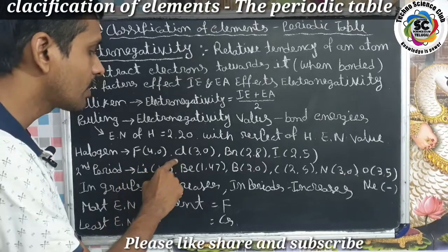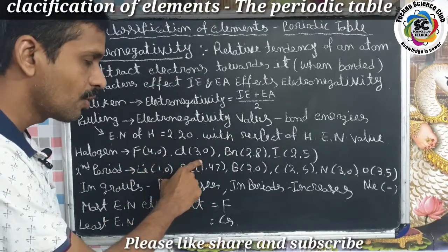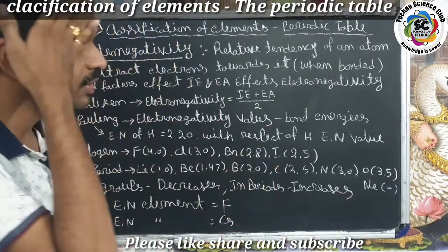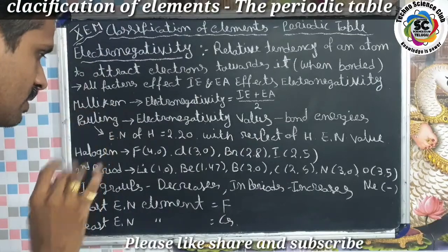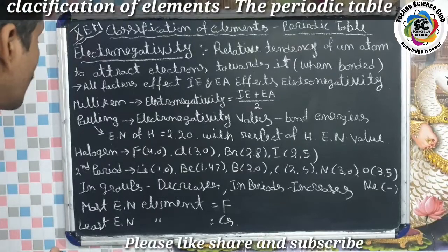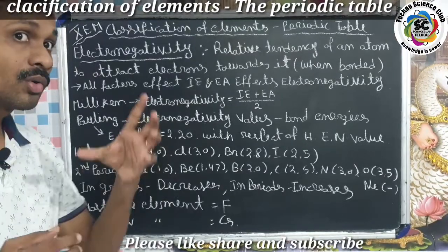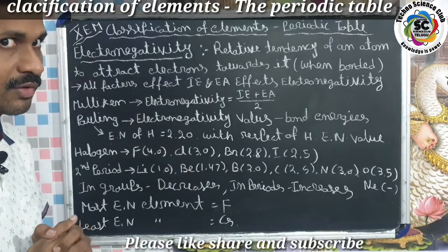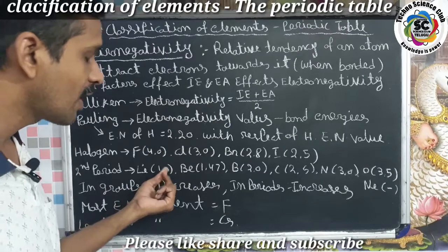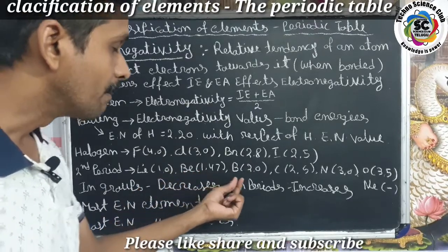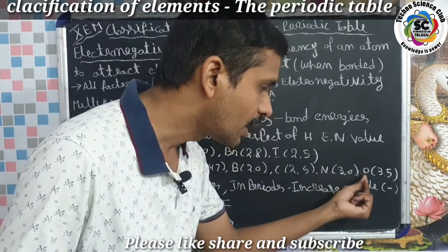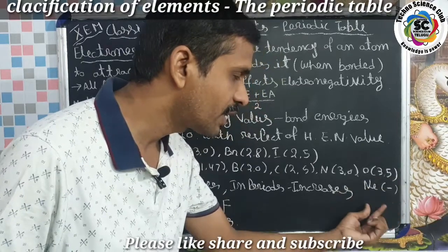For example, looking at the halogens — Group 17 elements: fluorine has an electronegativity value of 4.0, chlorine has 3.0, bromine has 2.8, and iodine has 2.5. In the second period: lithium has 1.0, beryllium has 1.47, boron has 2.0, carbon has 2.5, nitrogen has 3.0, and oxygen has 3.5.